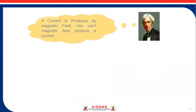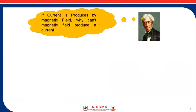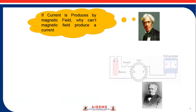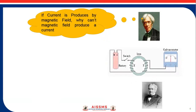Michael Faraday thought that if current is produced by a magnetic field, why can't a magnetic field produce a current? So Michael Faraday and Joseph Henry performed an experiment.